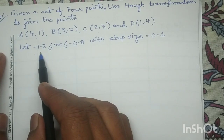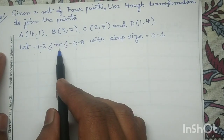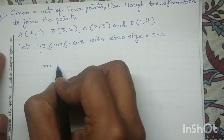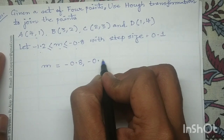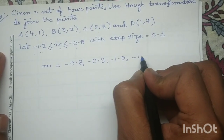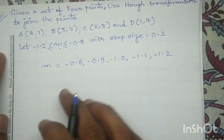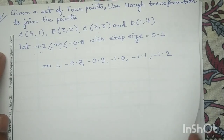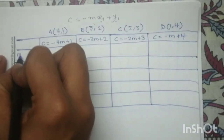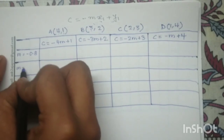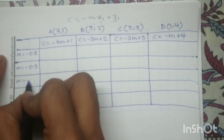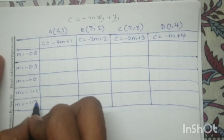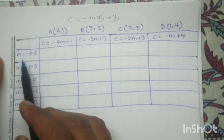In the next part of the question, the value of m varies from minus 1.2 to minus 0.8 with a step size of 0.1. So the permissible values of m are: minus 0.8, minus 0.9, minus 1.0, minus 1.1, and minus 1.2. We will write these values: m equals to minus 0.8, m equals to minus 0.9, m equals to minus 1.0, m equals to minus 1.1, and m equals to minus 1.2.